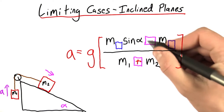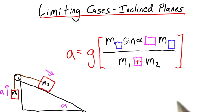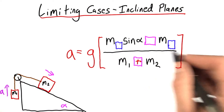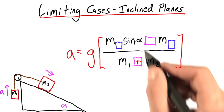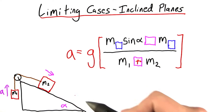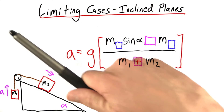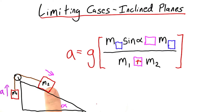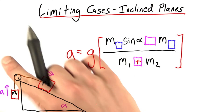Next, let's talk about this box. Should that be a plus or minus? Well, if it was a plus sign, this numerator would always be positive. That would indicate it would always accelerate in this direction, no matter what. But clearly, if this guy's huge and this mass is really tiny, it should accelerate the other way.